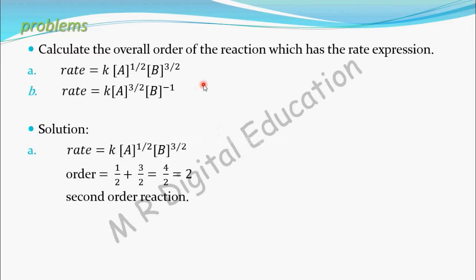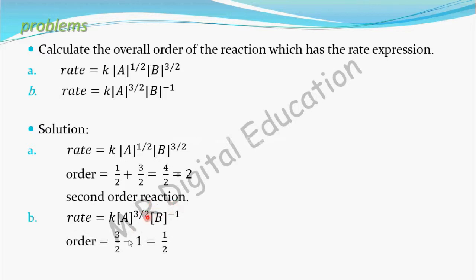Take this one now. For this rate law, order is nothing but sum of powers: 3 by 2 minus 1 equals 1 by 2. So it is a half order reaction.